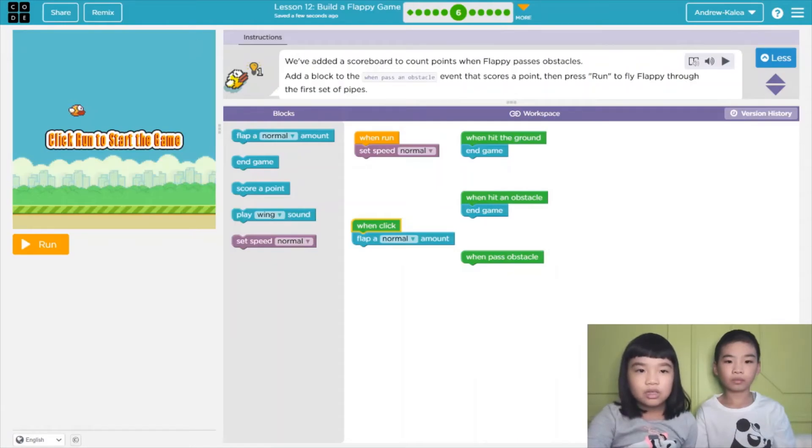Now the instruction says, we're adding a scoreboard to count points when Flappy passes obstacles. Add a block to the when pass an obstacle event that scores a point, then press run to fly through the first set of pipes. So, when run, it sets speed to normal. When hit ground, end game. When hit an obstacle, end game. When click, flap a normal amount.